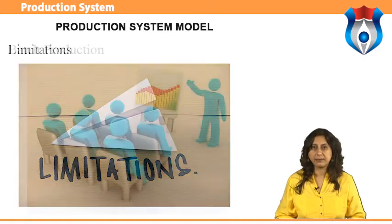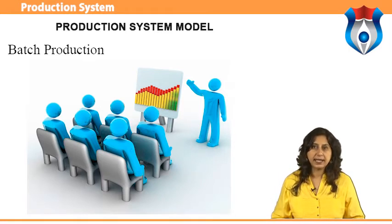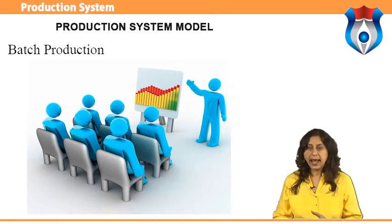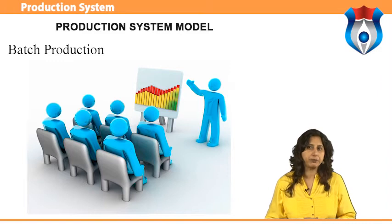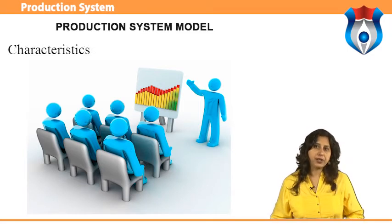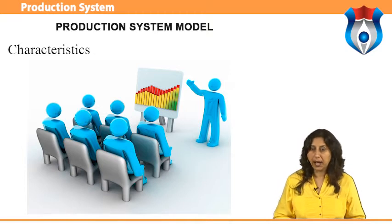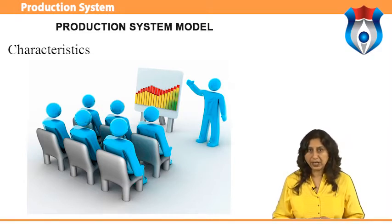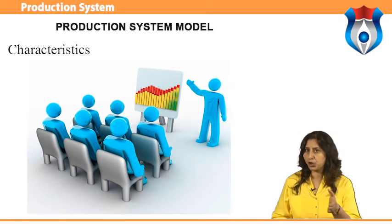Batch production is defined by APICS as a form of manufacturing in which the job passes through functional departments in lots or batches, and each lot may have a different routing. It is characterized by the manufacture of a limited number of products produced at regular intervals and stocked awaiting sales. Batch production is used when there are shorter production runs, when plant and machinery are flexible, and when manufacturing lead time and cost are lower compared to job order production.